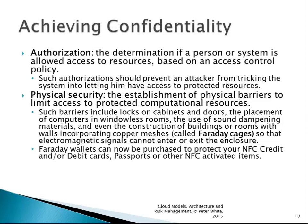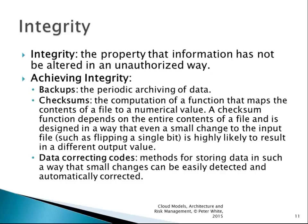Those are a number of ways we would use to achieve confidentiality. We also have the characteristic of integrity — ensuring the property has not been altered in an unauthorized way. To achieve this, we do things like backups, periodically backing up and archiving data. We might run checksums, computing a function that maps the entire contents of the file to a numerical value. Even flipping a single bit will give you a different output value, and if the checksum doesn't match, you know the file has been changed.